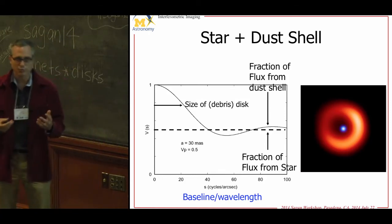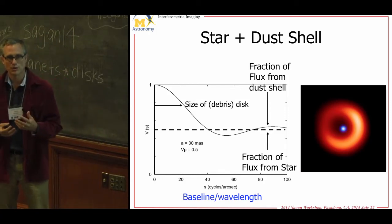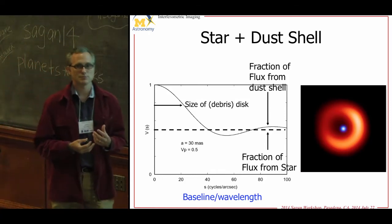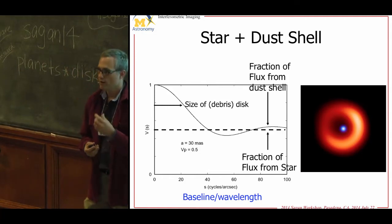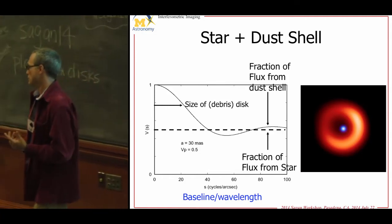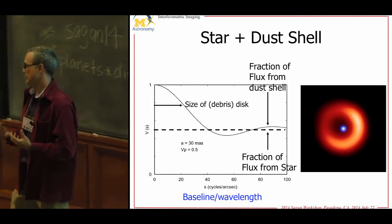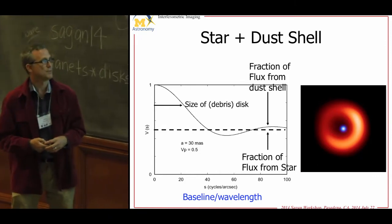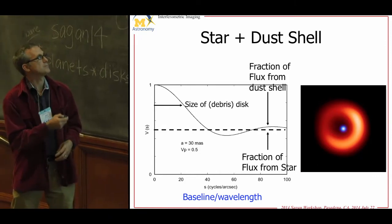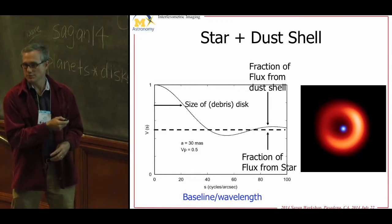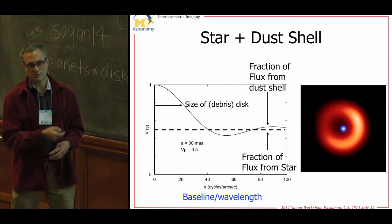This is relevant to debris disks — one area where interferometers have made progress is measuring very faint contributions from debris disks around stars related to planet formation. That's measuring this drop-off in visibility in an interferometer.